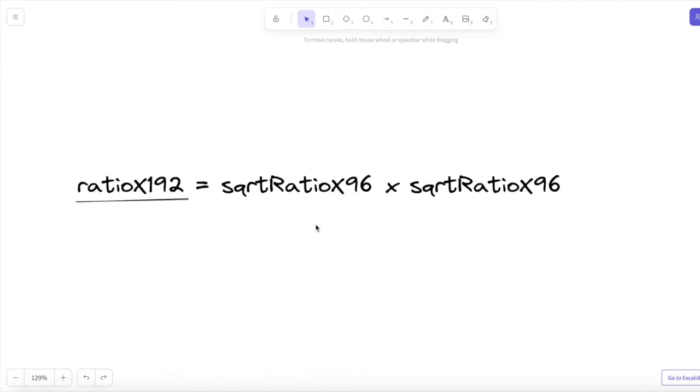The first step is to multiply it by itself. The square root ratio x96 multiplied by the same square root ratio x96 gives us the ratio x192, because a square root multiplied by itself gives us the actual number rather than the square root. And it's x192 because 96 plus 96 equals 192. That is now the length after multiplying two x96 values by each other.